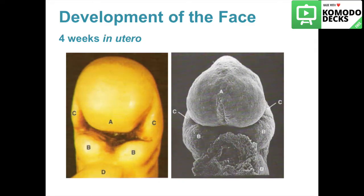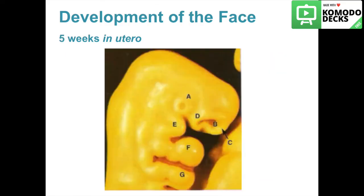Part D is the pericardial swelling. In the fifth week in utero, the nasal and optic placodes will form. Here in A you see the optic placode, in B the nasal pits, and in C the medial nasal process. D is the lateral nasal process, which is positioned upward and toward the eye. Part E is the maxillary process, F is the mandibular process, and G is the second branchial arch.